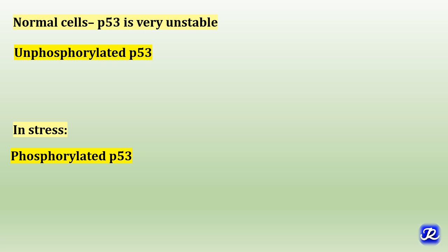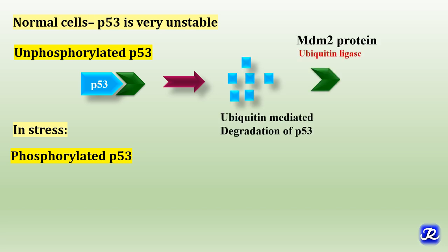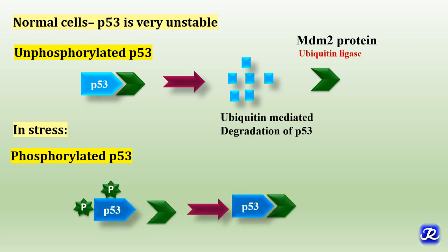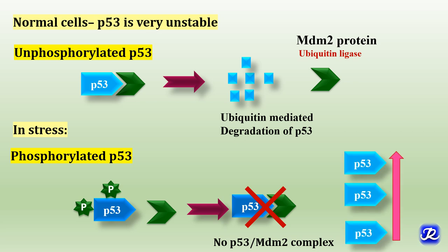In normal cells, the level of P53 is regulated by MDM2 protein. Unphosphorylated P53 is bound to MDM2 protein, which is a ubiquitin ligase that attaches ubiquitin to P53 and promotes its degradation by the proteasome. So in normal cells P53 is very unstable. But under stress conditions, when P53 becomes phosphorylated, MDM2 protein is unable to attach to phosphorylated P53, so there is no complex formation and no ubiquitin-mediated degradation, ultimately resulting in increased levels of P53.